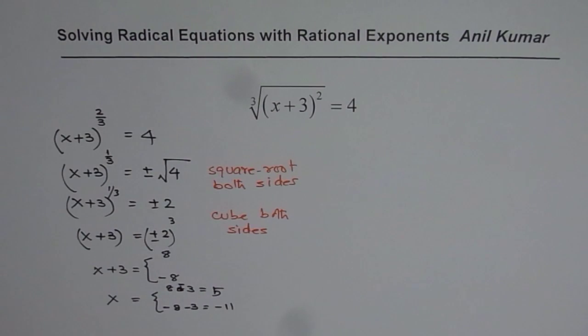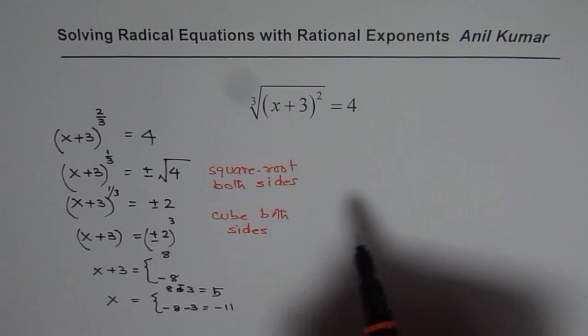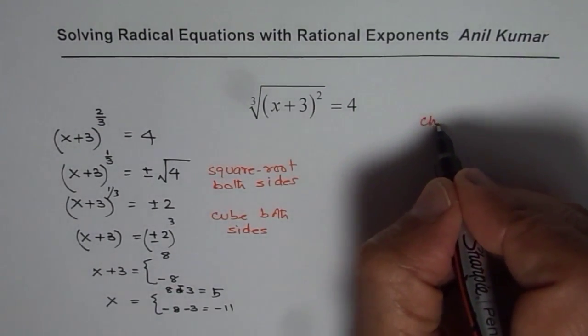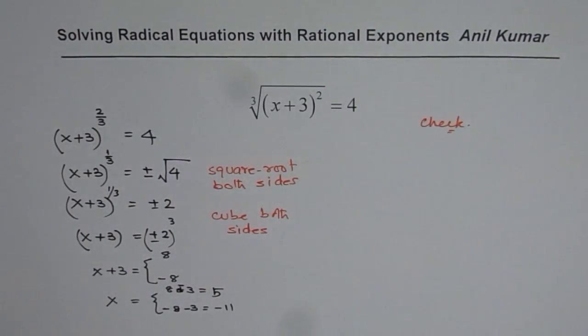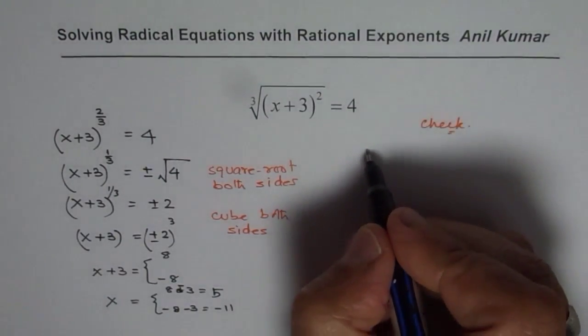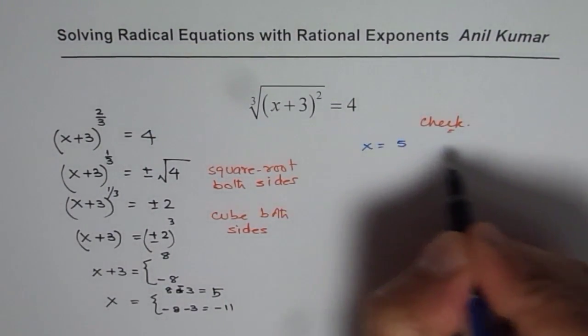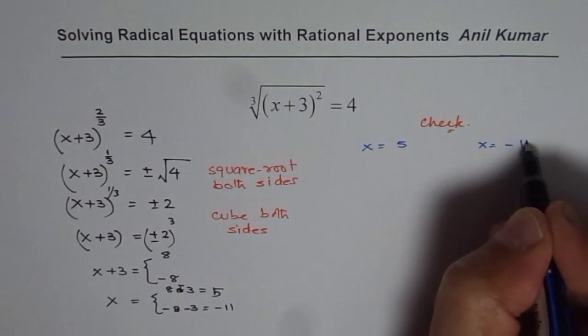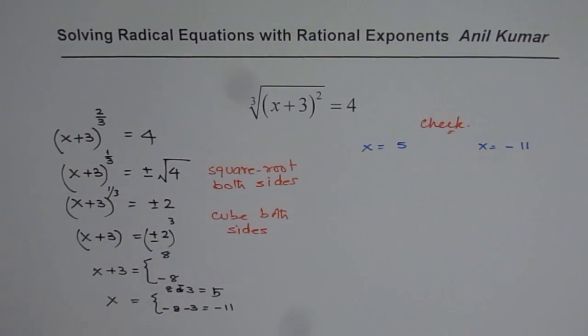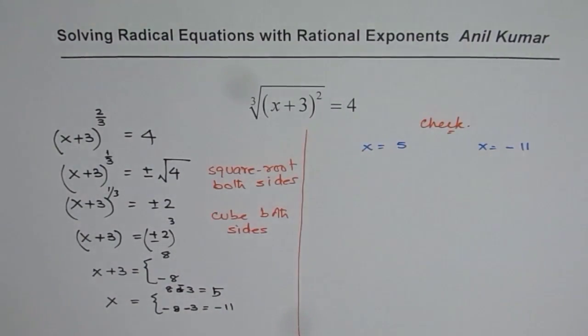So you get possibly two solutions. Now as a part of routine, you should also check them. Let us check these solutions. The two solutions are x equals to 5 or x equals to minus 11. So let us substitute the values and check the solutions.